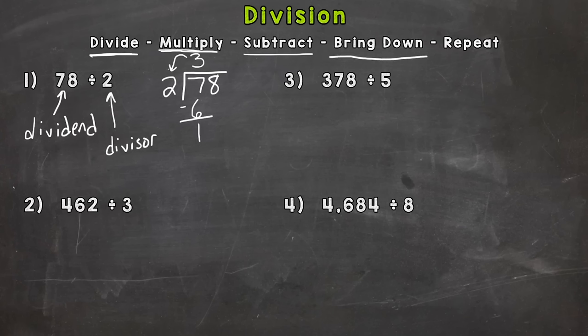And then bring down. So the next, the number we bring down is the next number. So next to the 7 we have an 8. That's what we bring down. And I like to use an arrow. That way it helps me keep things lined up and organized. So I bring down this 8.